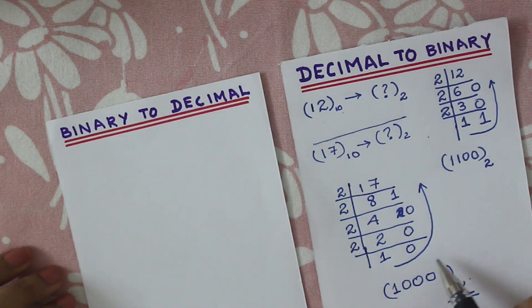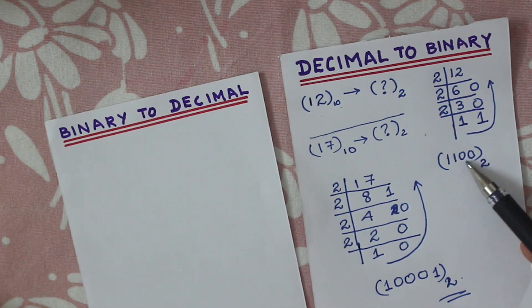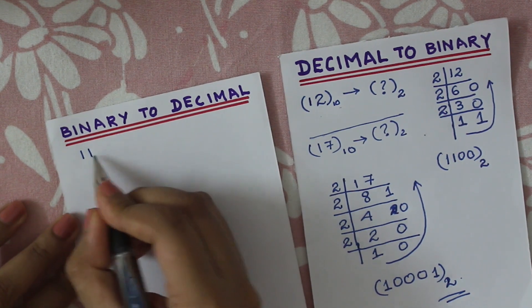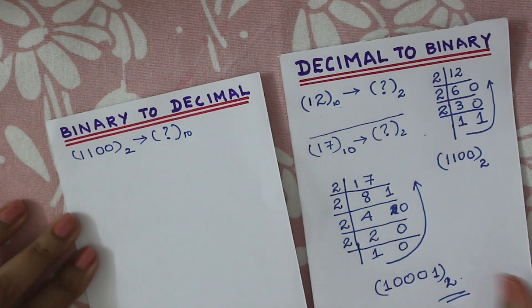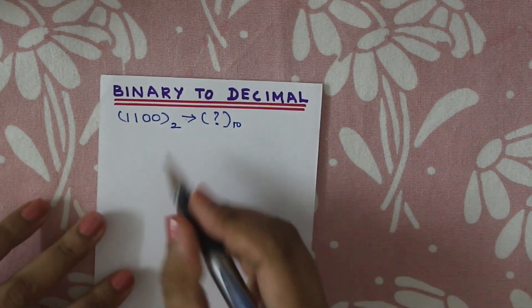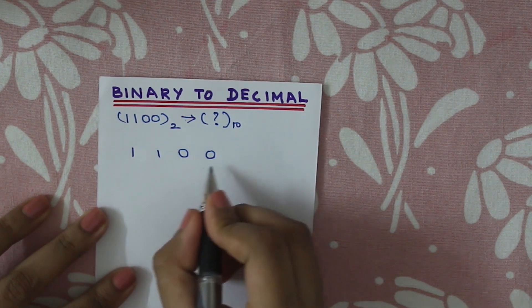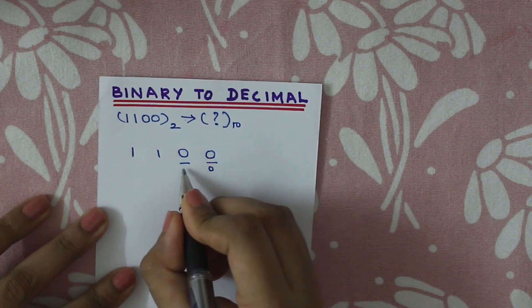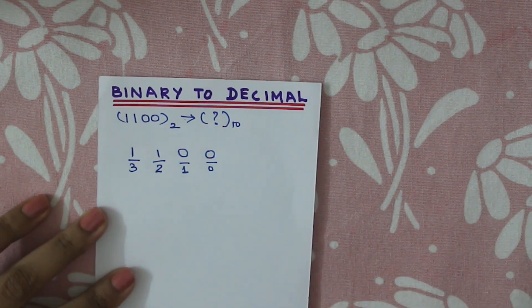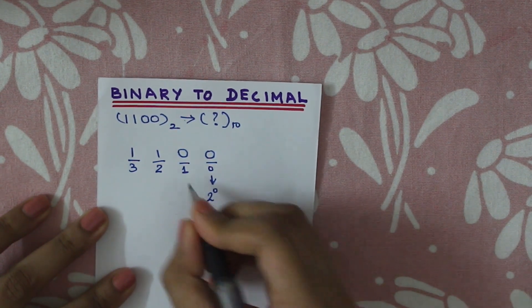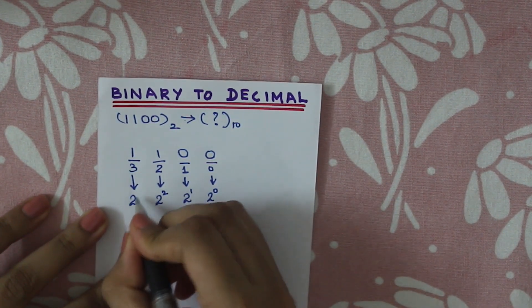Let's take these binary values and convert them back to decimal. We'll start with 1 1 0 0. Going right to left, we assign positional powers: the rightmost digit is position 0, then 1, 2, 3. So each bit is multiplied by 2 to the power of its position: this gives 2 power 0, 2 power 1, 2 power 2, 2 power 3.